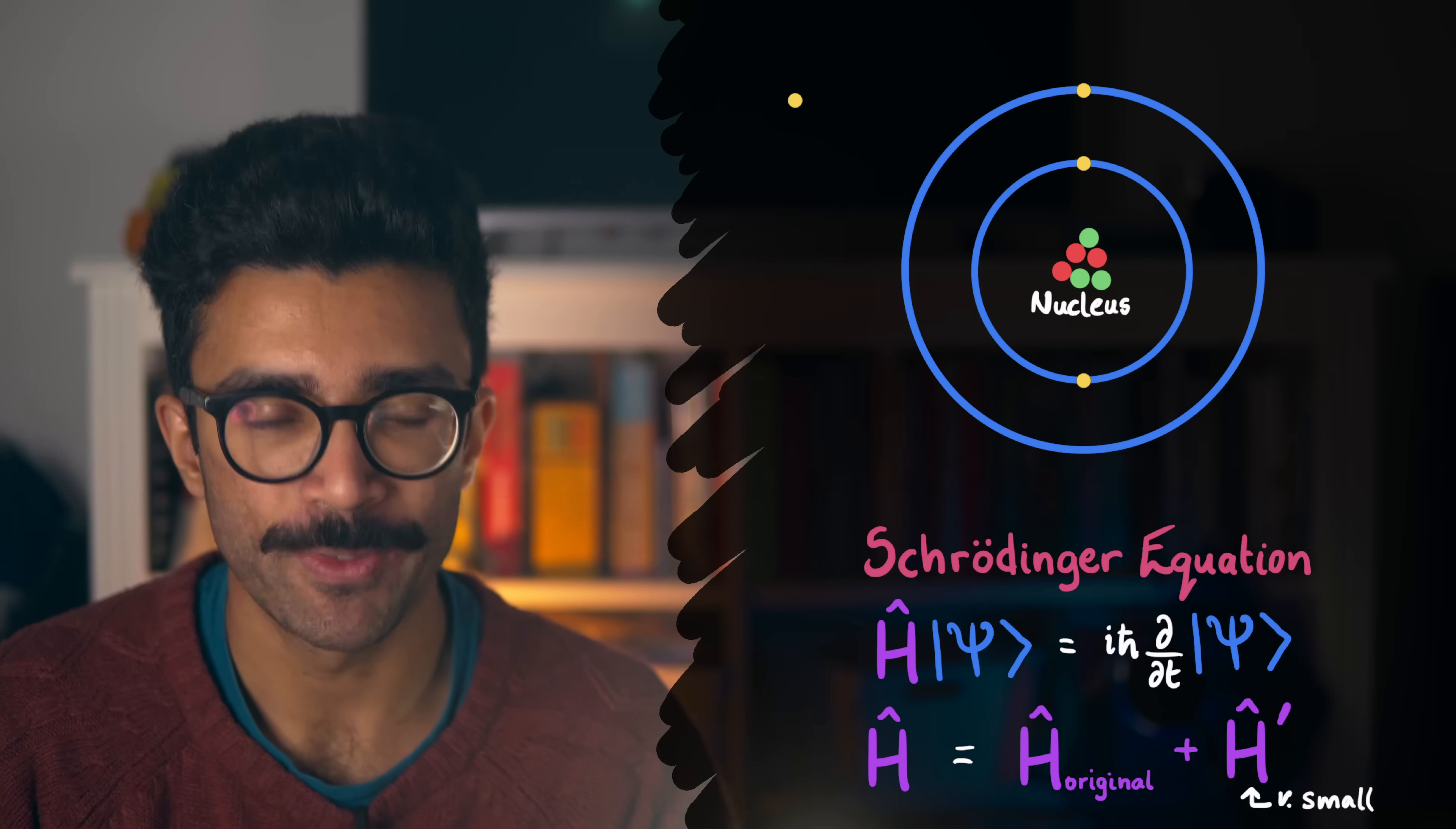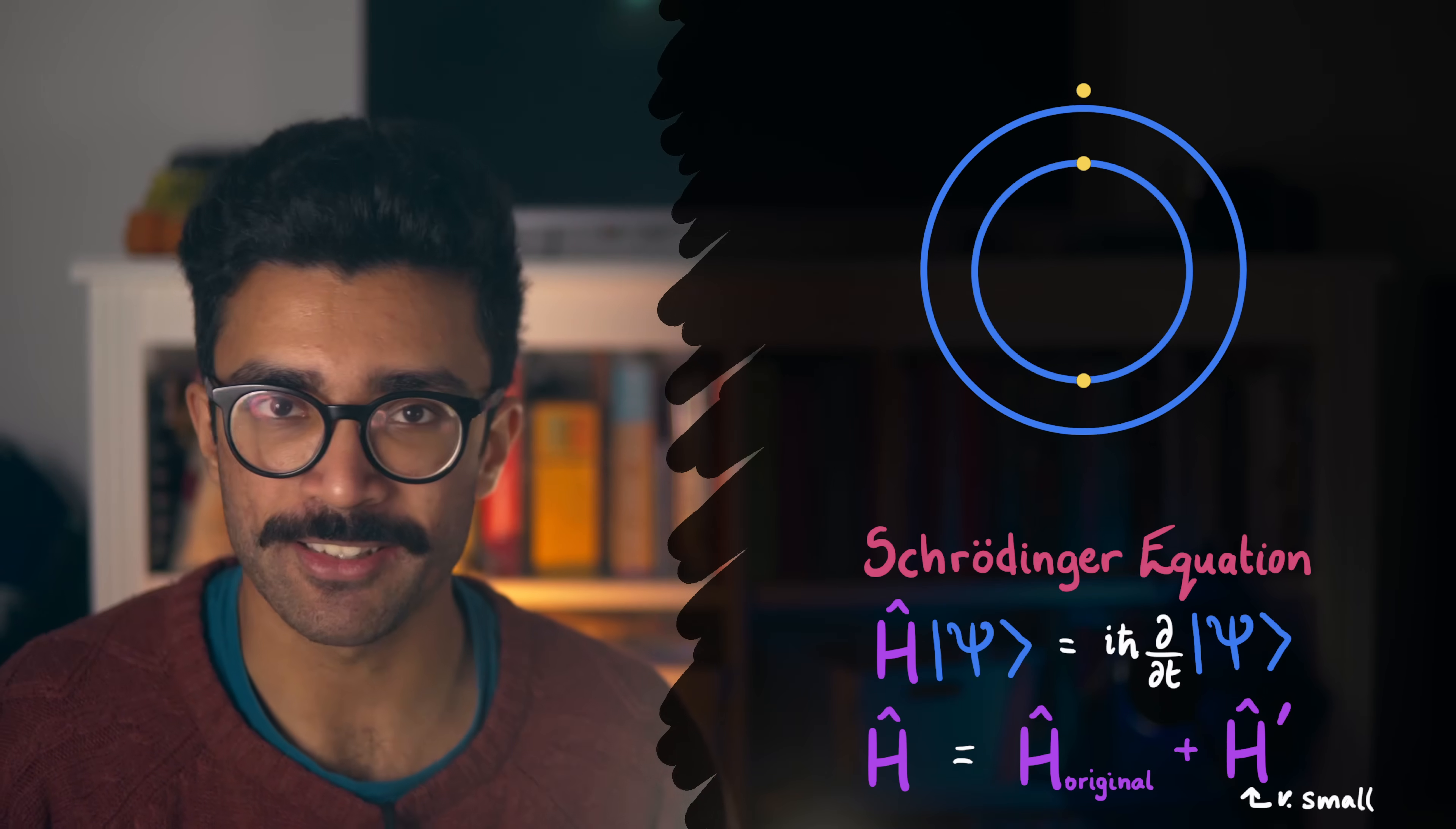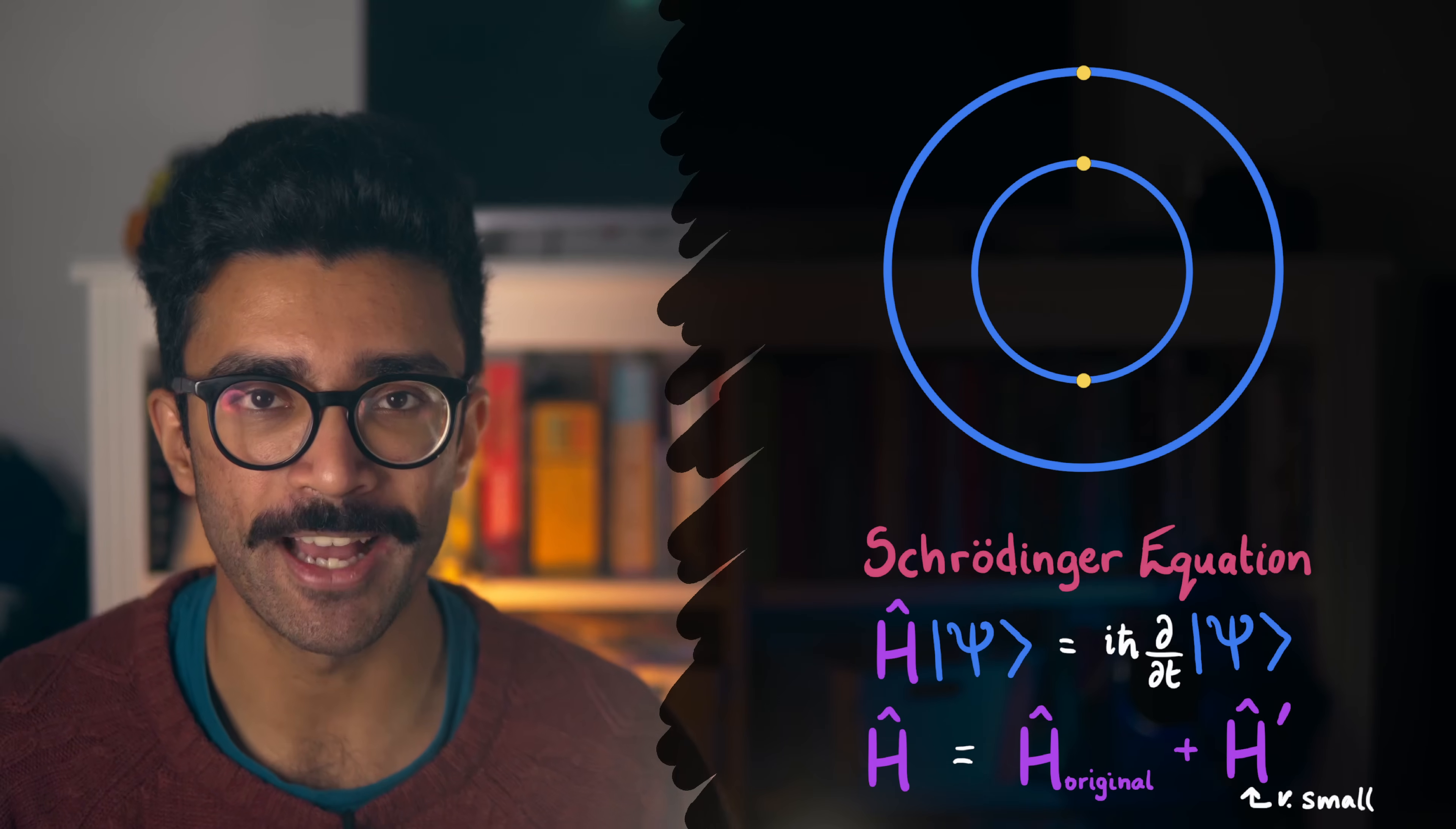So the result of all of this is that the allowed energy levels of our new atom will change very slightly. In some cases, there might be a slight decrease in the allowed energy of a particular energy level, and in other cases, there might be a slight increase. The trouble is, though, that the electrons in the atom are initially in the old energy levels, so they will have to transition somehow to the new allowed energy levels. And this is exactly what Fermi's golden rule looks at.